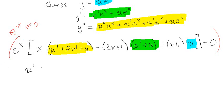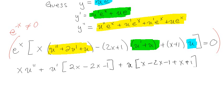And now I'm going to distribute. So I've got u'' times x. u' is going to be times 2x minus 2x minus 1 plus x, so that's just 2x minus 1. And then the u by itself is going to be multiplied by x minus 2x minus 1 plus x plus 1.